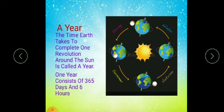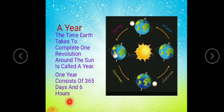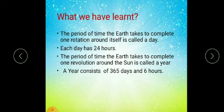One year consists of 365 days and six hours. The time earth takes to complete one revolution around the sun is said to be a year, and this one year consists of 365 days and six hours. If you see our Gregorian calendar, you will notice it consists of 365 days and six hours.